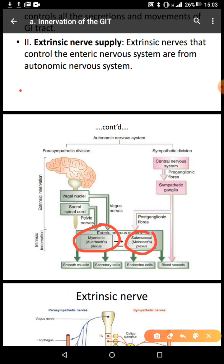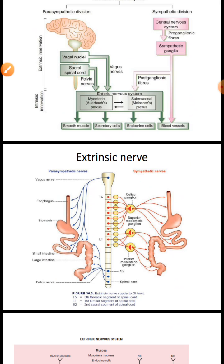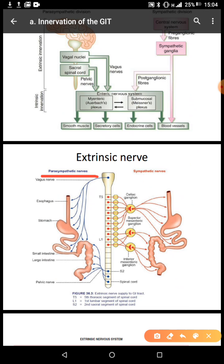We have innervation from external sources: the parasympathetic division and the sympathetic division. The sympathetic division is associated with the spinal nerves, and the parasympathetic division is associated with the cranial nerves. When talking of parasympathetic innervation of the GIT, we're talking of the vagus nerve and the pelvic nerve.